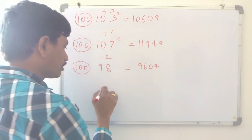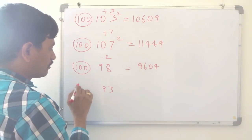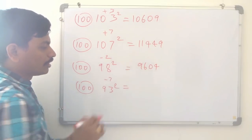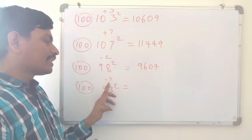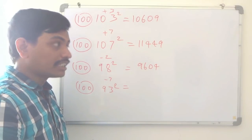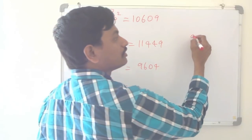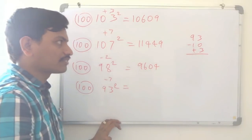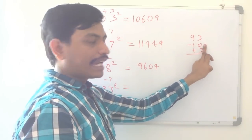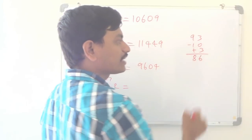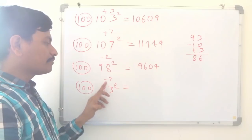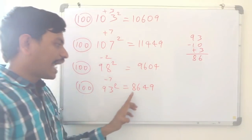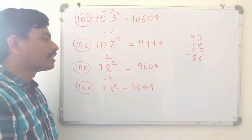I will take another number: 93, which is nearer to 100. 93 is how much less than 100? Minus 7. To subtract 7 from 93, I do minus 10 plus 3: 93 minus 10 is 83, plus 3 is 86. That is a very easy and fast way. And 7 squared is 49. So 8649 is the square of 93.